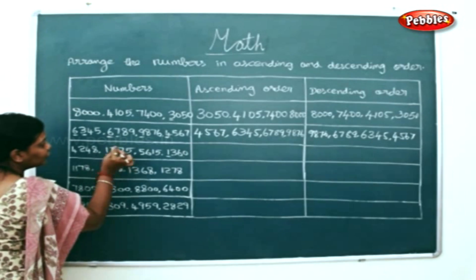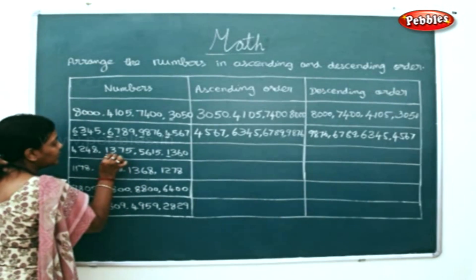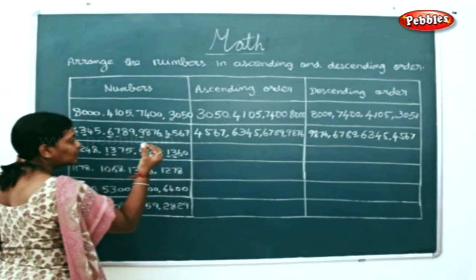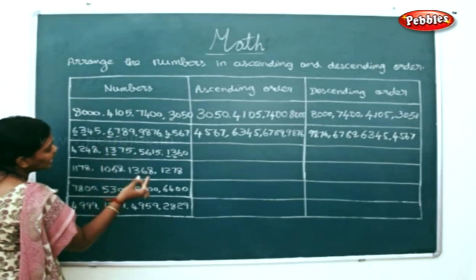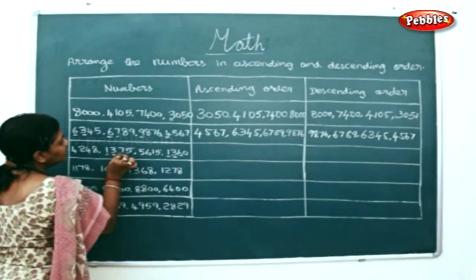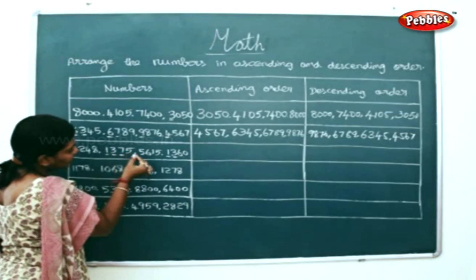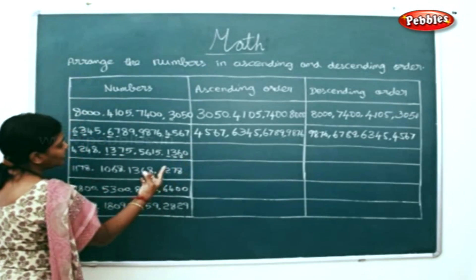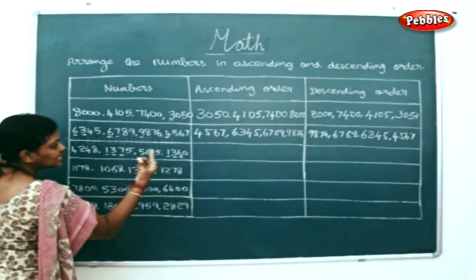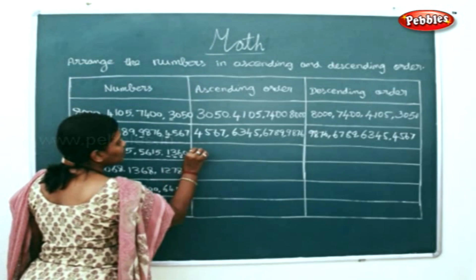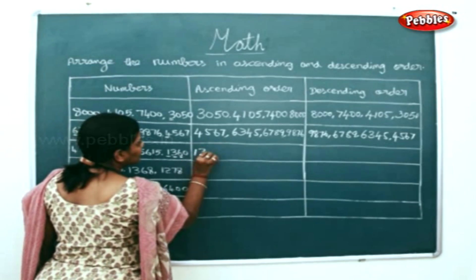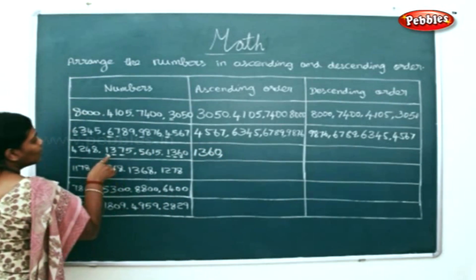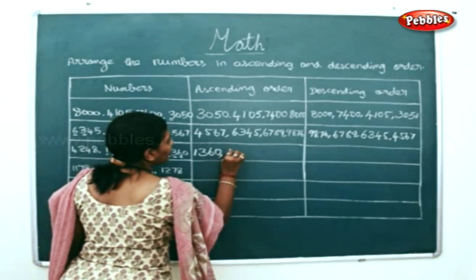You will check the hundreds places. In the next hundred, you have 3 here and you have a 3 here again. Then, we will go to the tens places. In the tens place, you have a 7 here and a 6 here. Comparing 6 and 7, 7 is lower. So: 1, 3, 6, 0; then 1, 3, 7, 5.